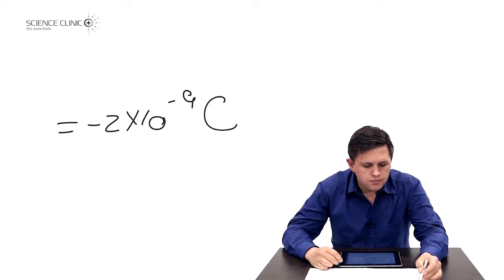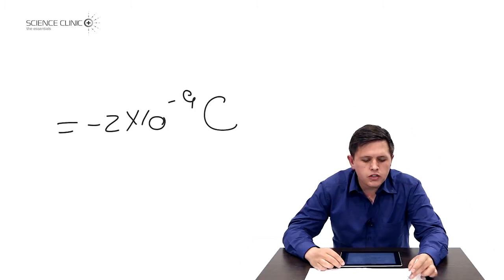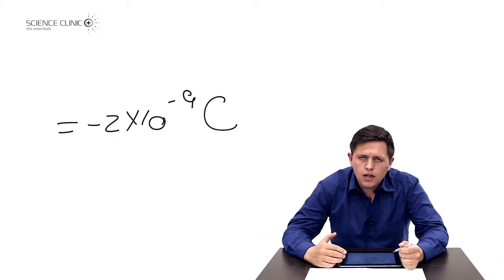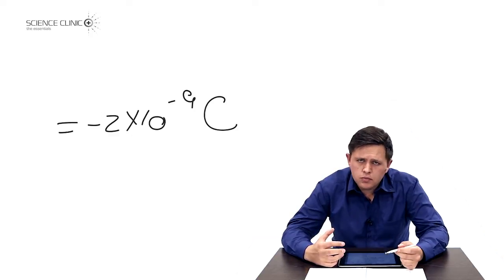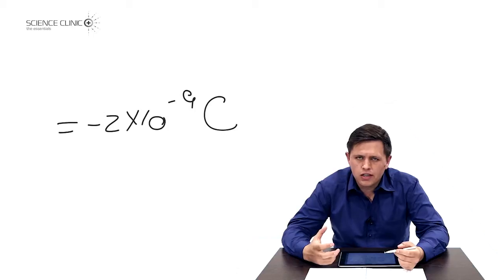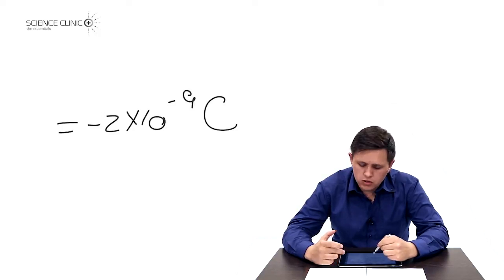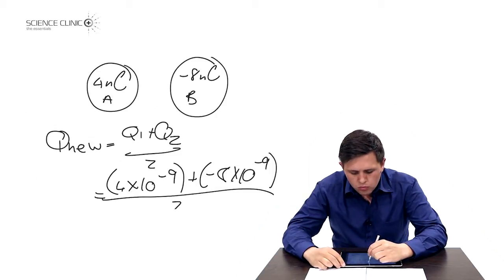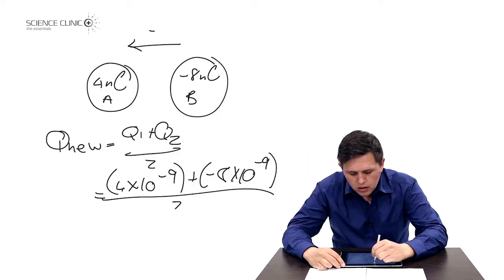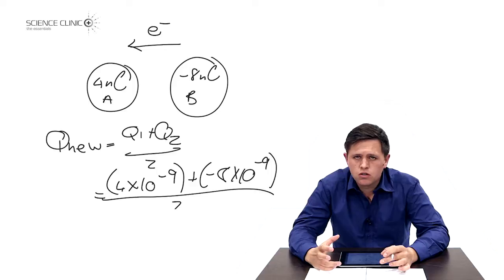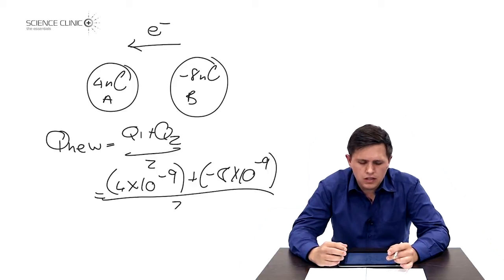The next question asks in which direction electrons move — from A to B, or B to A. Sphere B has a negative charge, meaning it has an excess of electrons. Sphere A has a positive charge, meaning a deficit of electrons. Therefore, electrons will move from B to A — they always move from the sphere with the most electrons to the sphere with the least.